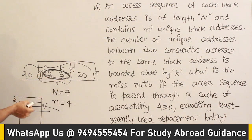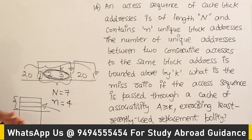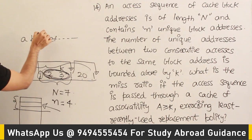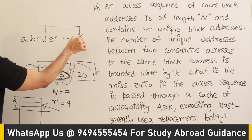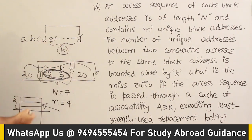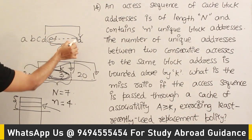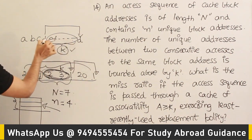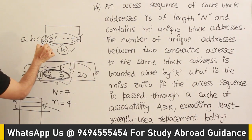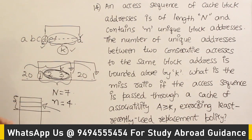Even if all k references map to the same set in the worst case, we can accommodate them without replacing the original block. Therefore, for any given block, there will be only one miss — when it is referred the first time. The second time it is referred, it will be a hit, because it still sits in the cache.